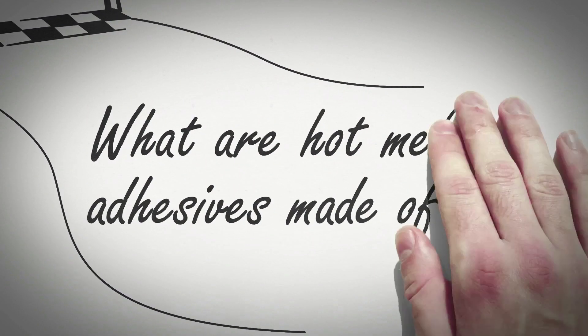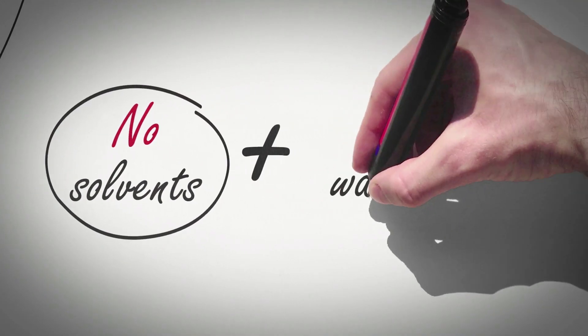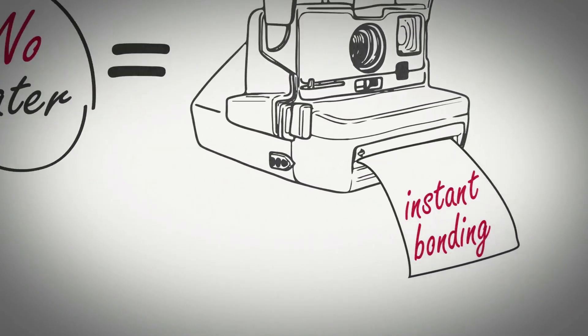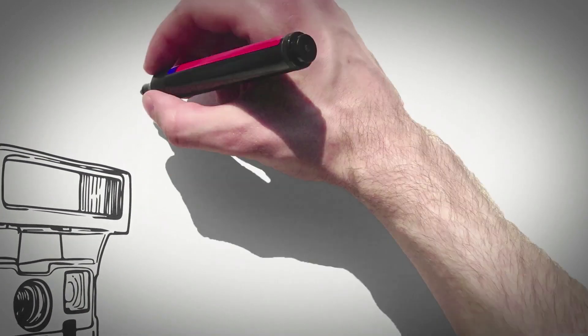Hot melt adhesives are 100% solid and contain no solvents and no water and are instant bonding. They set by the loss of heat which gives them a very fast setting speed.